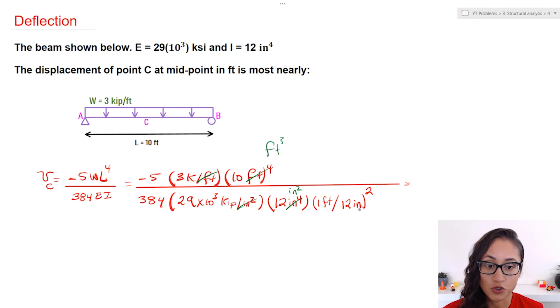We have one foot over 12 inches and everything has to be squared, and so now what I'm going to be left with is feet squared in the denominator. Now feet cubed with feet squared cancels and we're left with feet and that's what we need.